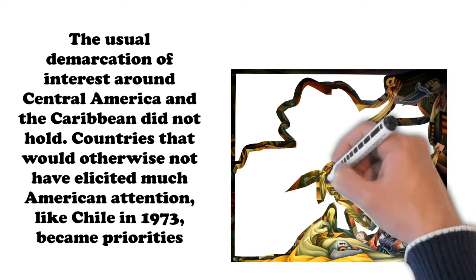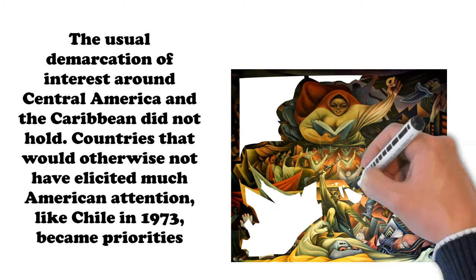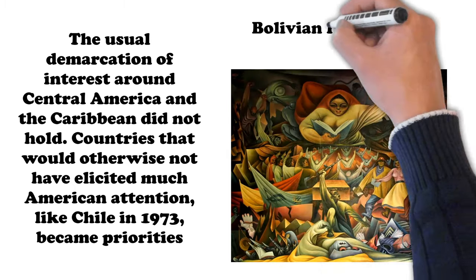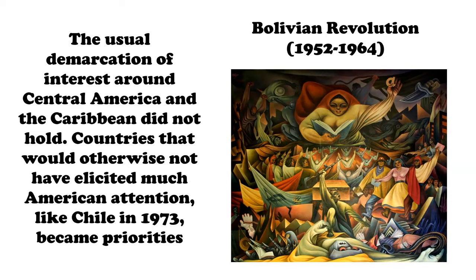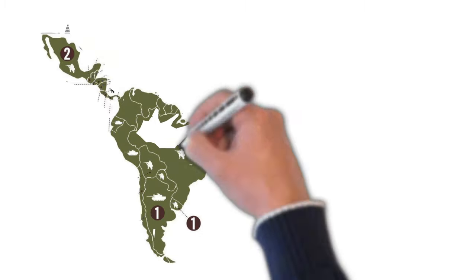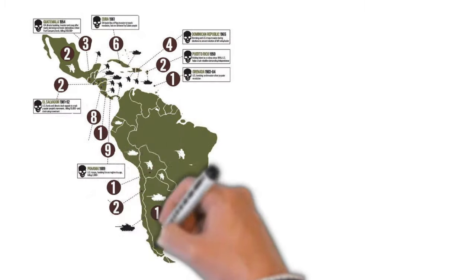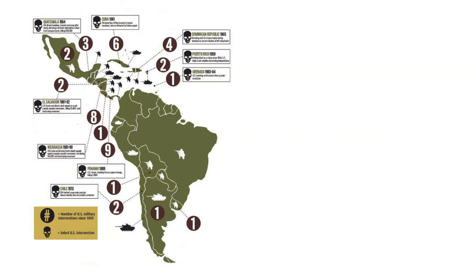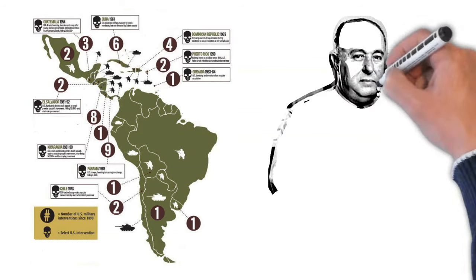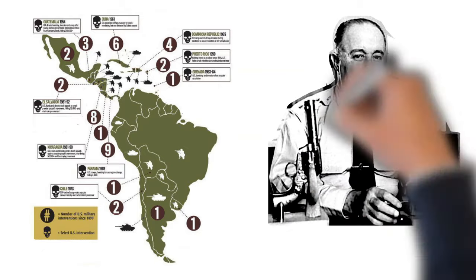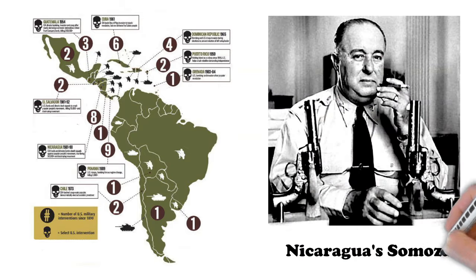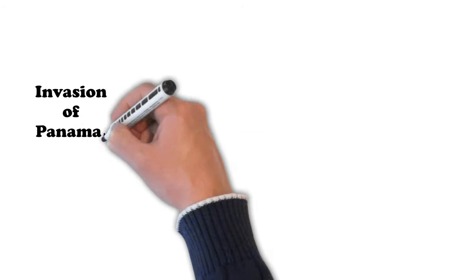One of the things that was different about U.S. foreign policy during the Cold War, beyond the prioritization of ideology, was that the usual demarcation of interest around Central America and the Caribbean did not hold. Countries that would otherwise not have elicited much American attention, like Chile in 1973, became priorities. Bolivia, for instance, received U.S. support during its revolution in the 1960s, mostly because Americans became convinced the regime was nationalist and not communist. Nonetheless, the brunt of intervention still occurred in Central America and the Caribbean — a long list of invasions, covert operations, and arms deals to support dictators, from El Salvador's military dictatorship to Somoza in Nicaragua and Trujillo and Balaguer in the Dominican Republic.